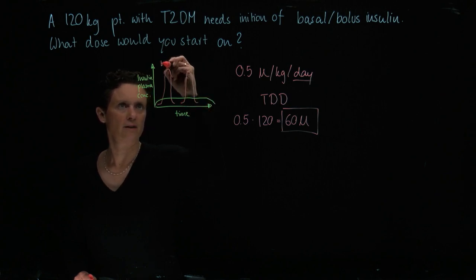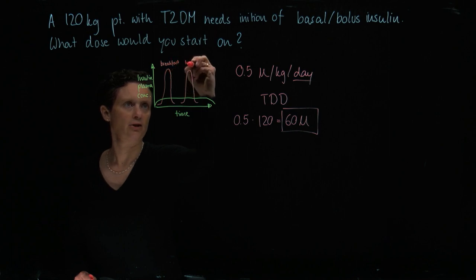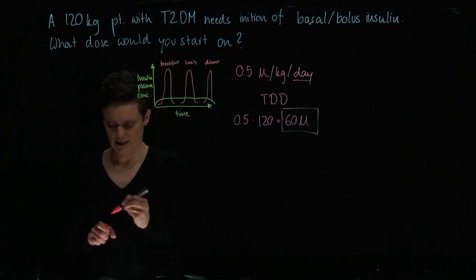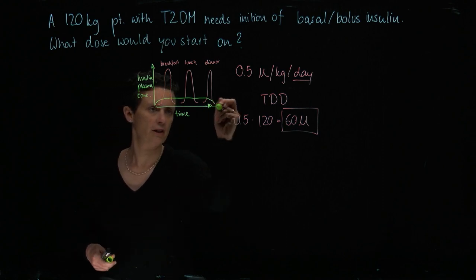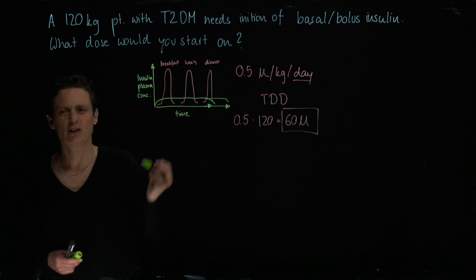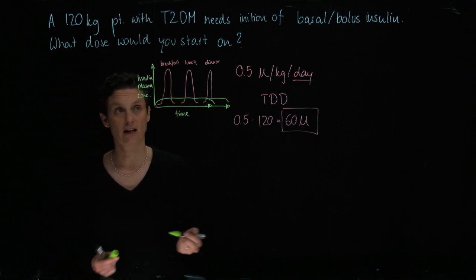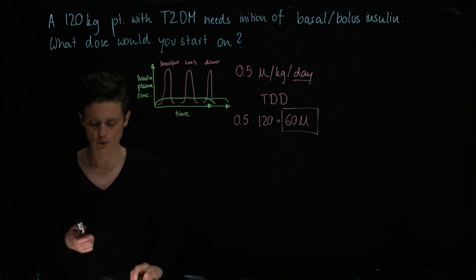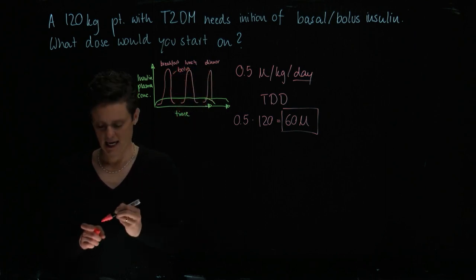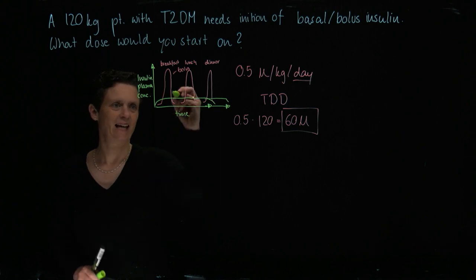But then we also need with breakfast a so-called bolus insulin. That's breakfast, lunch, and then the same for dinner. I'm here a little bit short with the timeline because that should continue to get my 24 hours. So that's usually what you want to have: three times a day a bolus insulin.